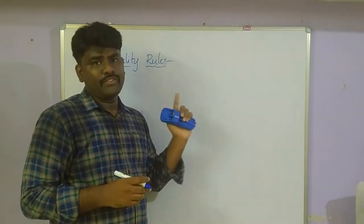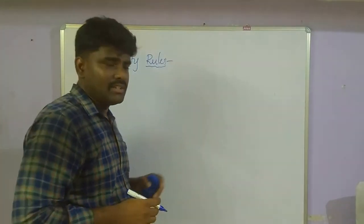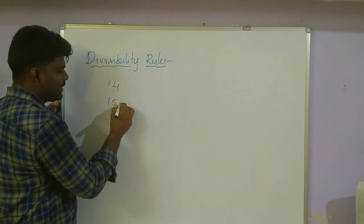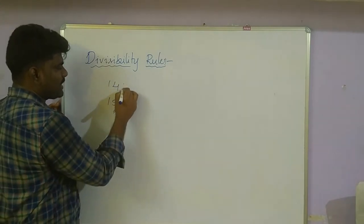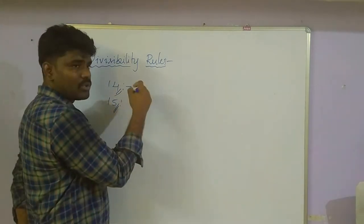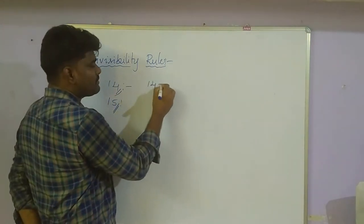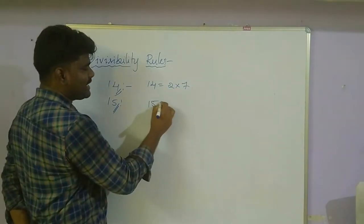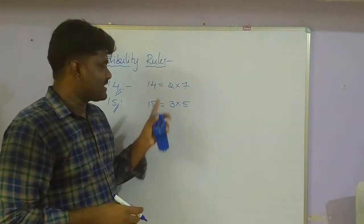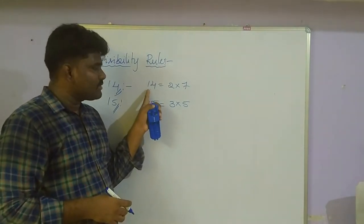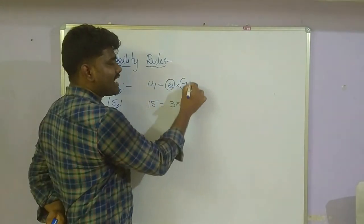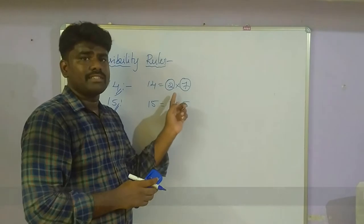Now we are entering into the 14 and 15 divisibility rules — these are easy. 14 can be written as a product of two co-prime numbers: 2 × 7. And 15 can be written as 3 × 5. To check divisibility by 14, we check if the number is divisible by both 2 and 7.